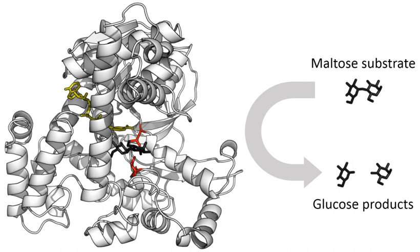Some enzymes can make their conversion of substrate to product occur many millions of times faster. An extreme example is orotidine-5-phosphate decarboxylase, which allows a reaction that would otherwise take millions of years to occur in milliseconds. Chemically, enzymes are like any catalyst and are not consumed in chemical reactions, nor do they alter the equilibrium of a reaction.